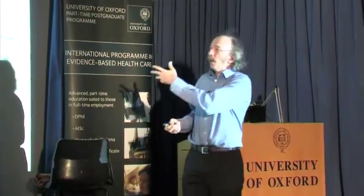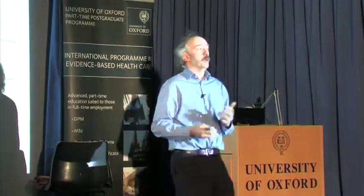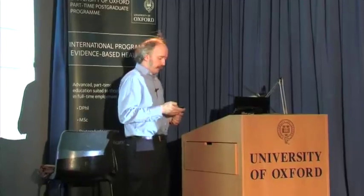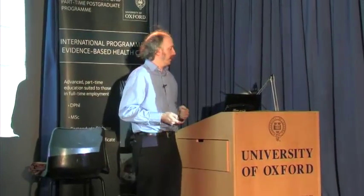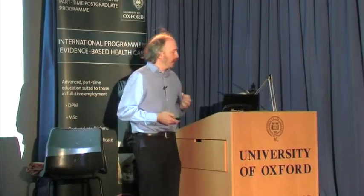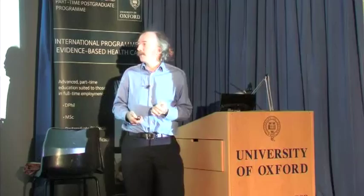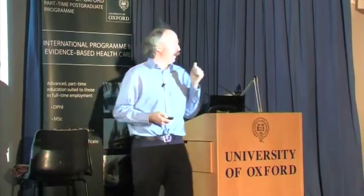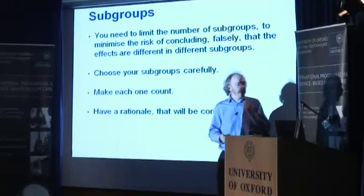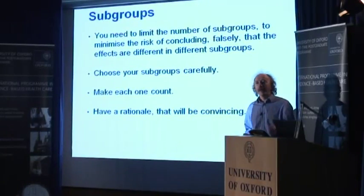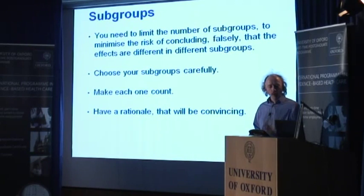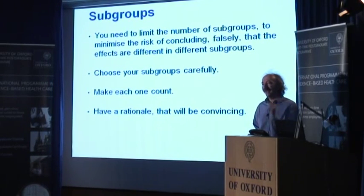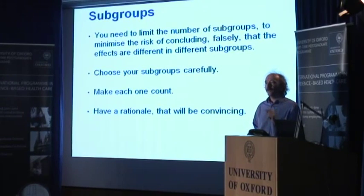It seemed beneficial for men, whereas when I saw this plot first, it seemed to be clearly beneficial for women. It is not difficult to come up with a rationale once you've seen the result. So with subgroups, you need to think about limiting the number of subgroups to minimise the chance of falsely concluding that there are differences in their effects, because that could lead to people making decisions that will be harmful.